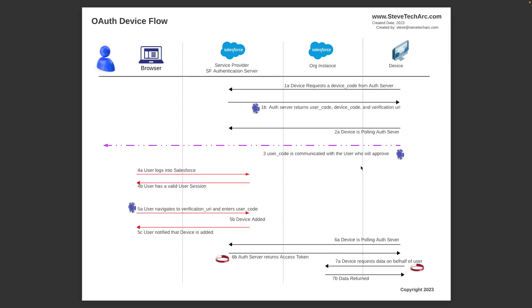So it starts on the right side with a request for the user code, switches to the left side where the user approves it, and then switches back to the right side where the access token is requested.